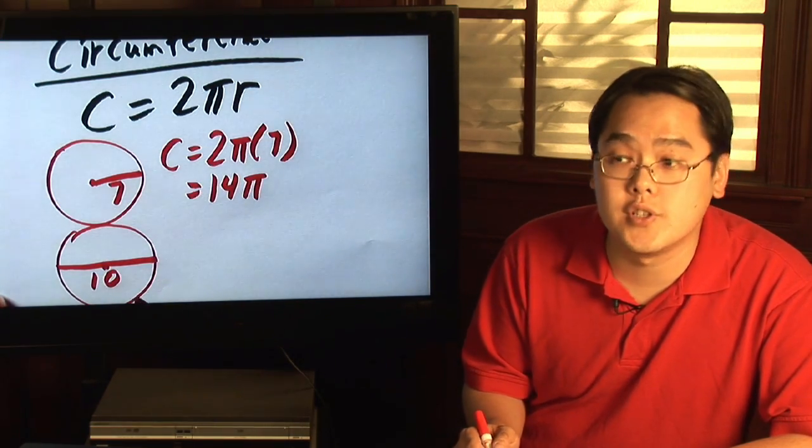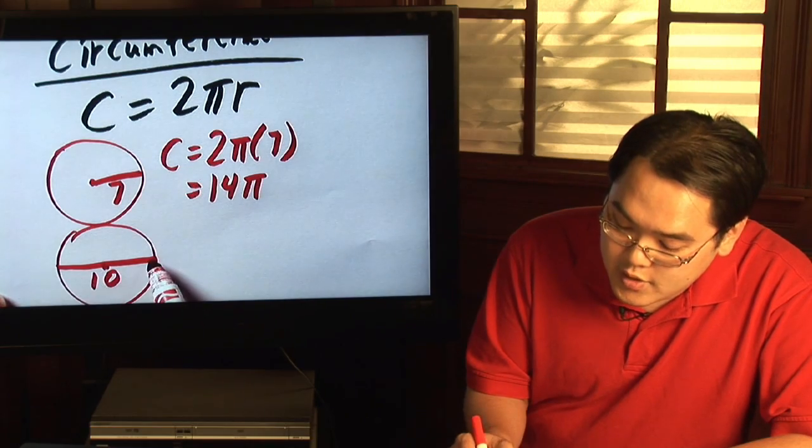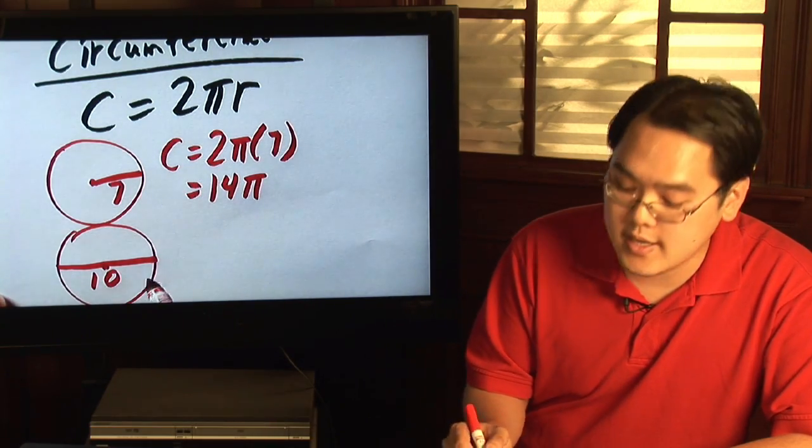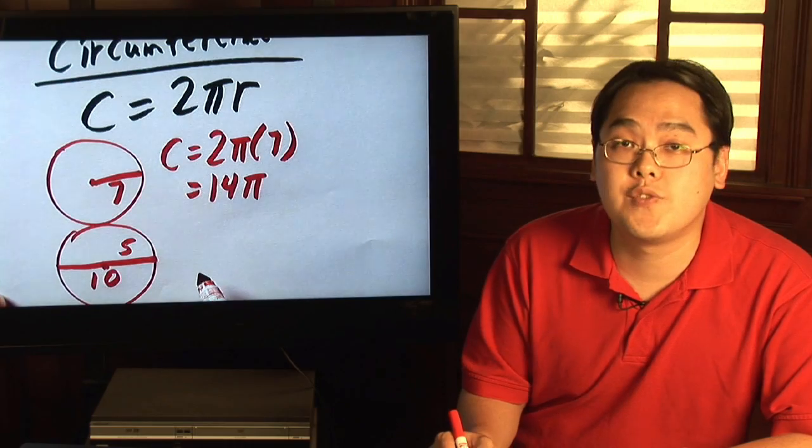but that's actually pretty straightforward to do because if the diameter, which is what the distance across is 10, then the radius has to be half that, which is 5.